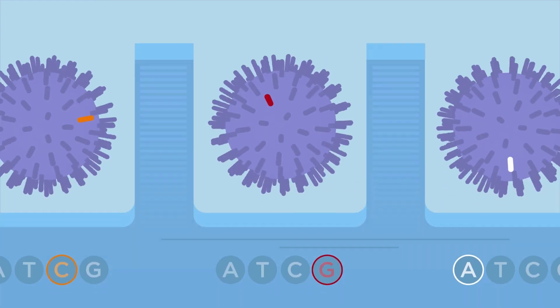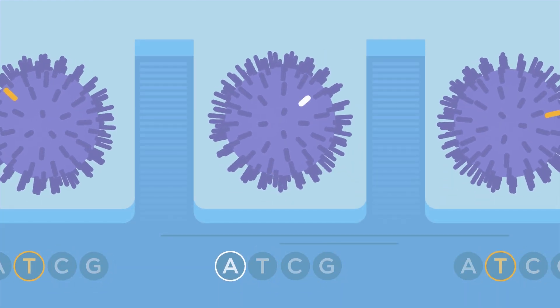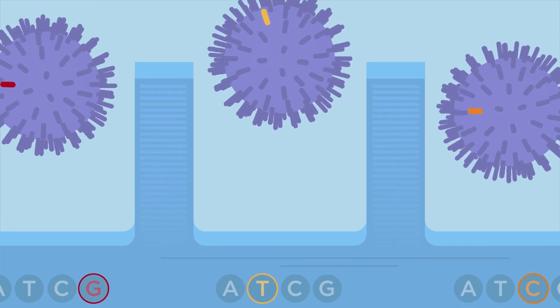The IonTorrent NGS technology uses a chip containing millions of wells with separate sequencing reactions occurring in parallel, allowing testing of thousands of genes and biomarkers at the same time.